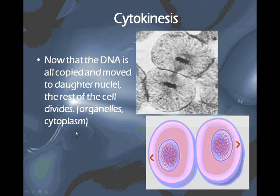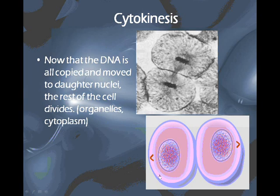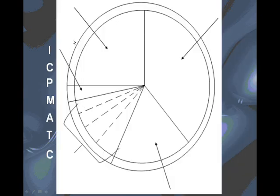After mitosis is complete, the cell now goes into cytokinesis, which is the division of the rest of the cell. Mitosis is only the division of the nucleus. Cytokinesis is when the rest of the cell divides. So now that the DNA is copied and moved into separate daughter nuclei, the rest of the cell — like the organelles in the cytoplasm — can now divide. That is seen on this piece of the diagram right here.